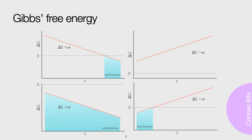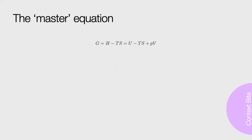Remember, when we are talking about spontaneous reactions, it is the thermodynamics that matters, and has nothing to do with the kinetics of the process. The following derivation is going to show what other factors can affect the Gibbs free energy. I do not expect you to be able to repeat independently this derivation, but the end result is important.